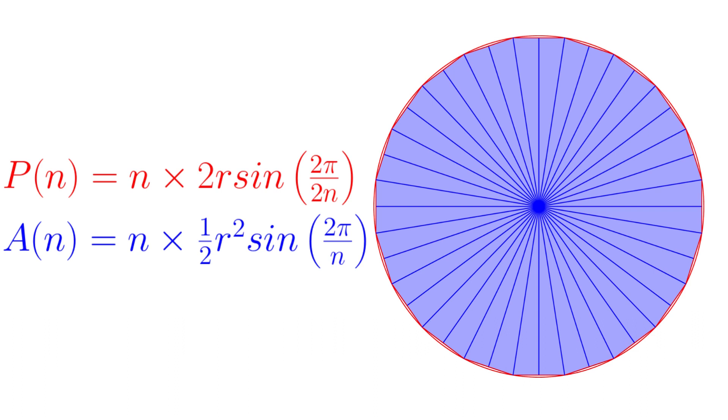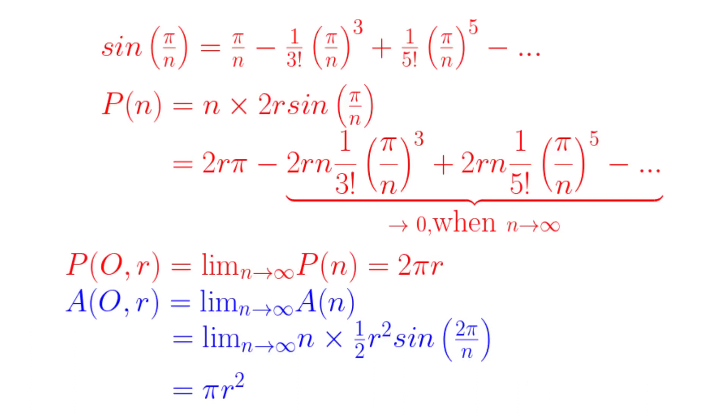We are going to calculate the limit of P(n) and A(n) when n tends to infinity. Thanks to the Taylor series, the sin function is expressed as a polynomial of infinite order of the argument. So is P(n). As n tends to infinity, the higher order of this polynomial tends to zero.